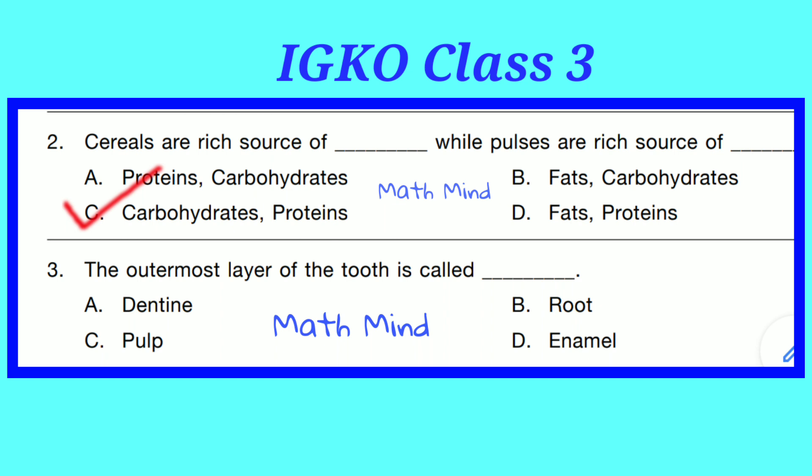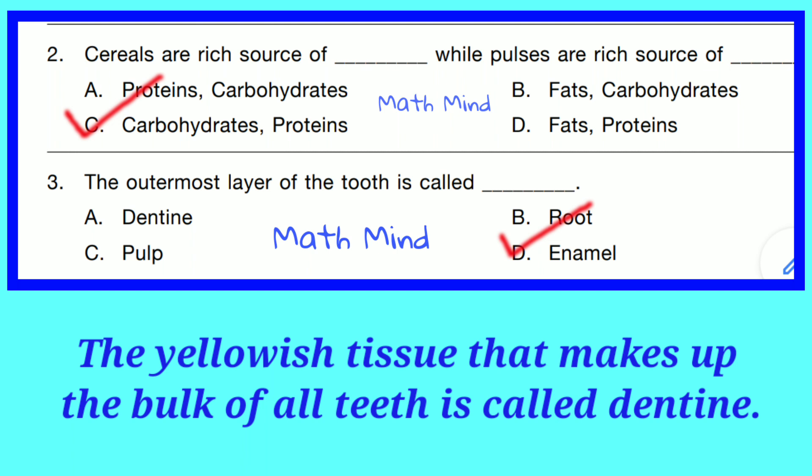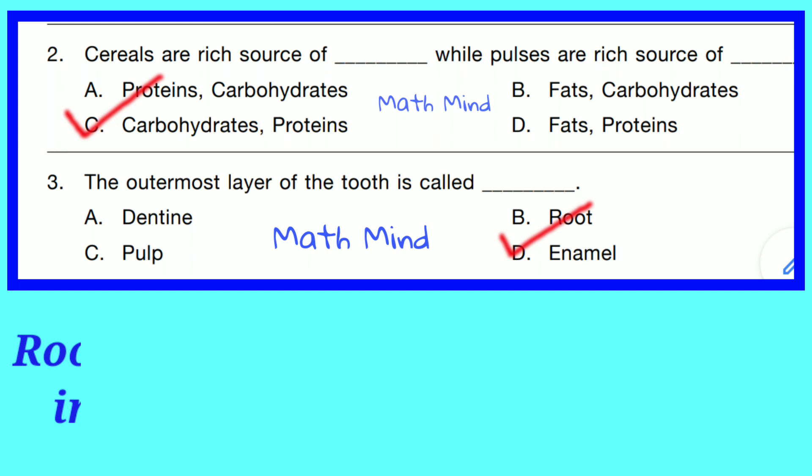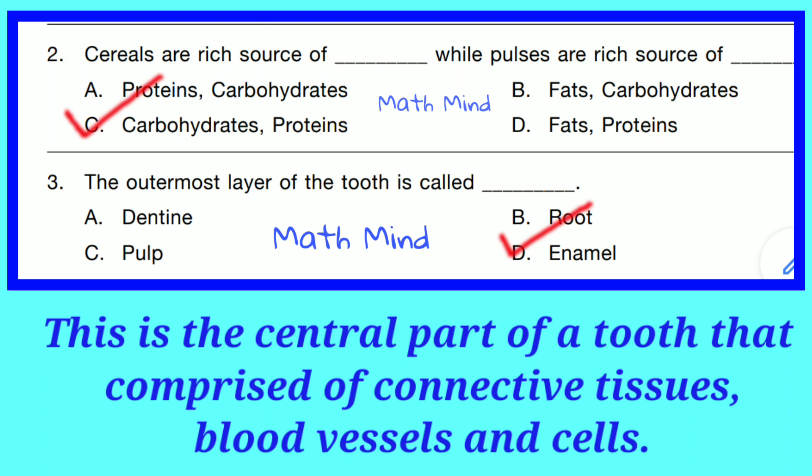Question No. 3. The outermost layer of the tooth is called enamel. Option D is correct — this is the protective layer that covers each and every tooth. Option A is Dentine, the calcified tissue that makes up the bulk of all teeth. Option B is Root, the part of the tooth that extends into the bone. Option C is Pulp, the central part of the tooth comprised of connective tissues, blood vessels and cells.